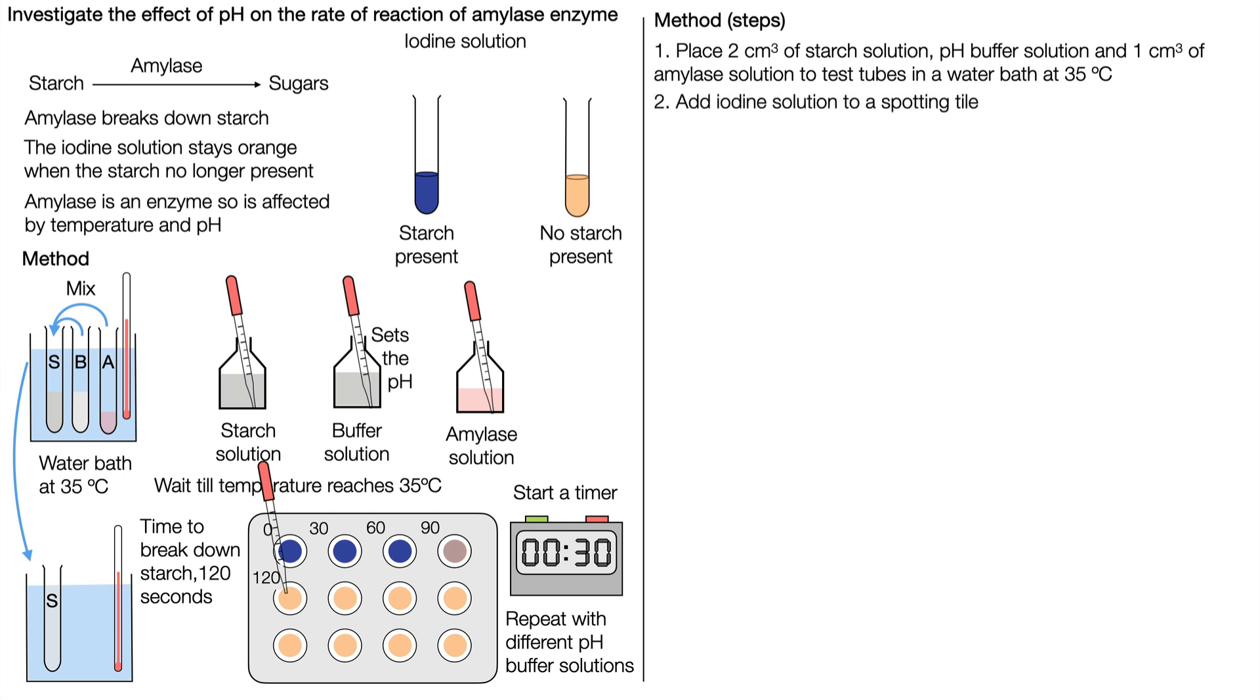We would add iodine solution to a spotting tile while we're waiting for the temperature to reach 35 degrees Celsius, and once the solution has reached 35 degrees we would mix them and start a timer.